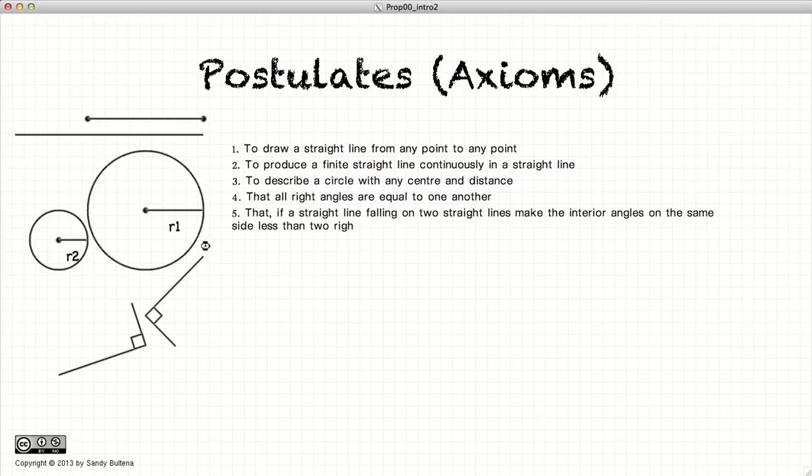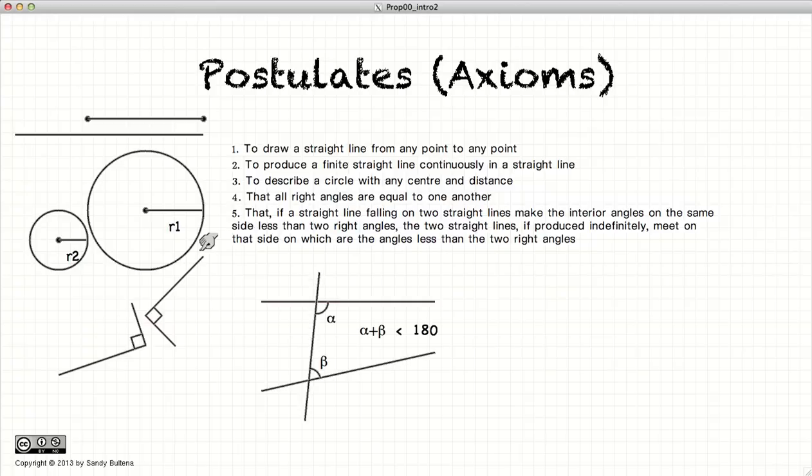And finally, the fifth postulate, the most famous of them all because it's kind of wordy and it's not as simple as the previous four. If we have two straight lines and a third crossing them, if the sum of the interior angles on one side of the line is less than 180 degrees, if you extend the other two lines, at some point they will cross each other.